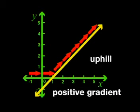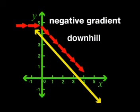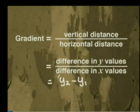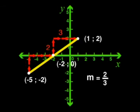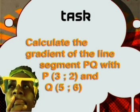We have covered a lot of ground today. Let's take a look at what we did. Today we developed an understanding of gradient. When a line is uphill from left to right, it has a positive gradient. When a line is downhill from left to right, it has a negative gradient. To find the gradient of any line segment, we can use the formula y2 minus y1 over x2 minus x1. The gradient of a straight line is constant. Now it's time for our task: calculate the gradient of line segment PQ with P(3, 2) and Q(5, 6).